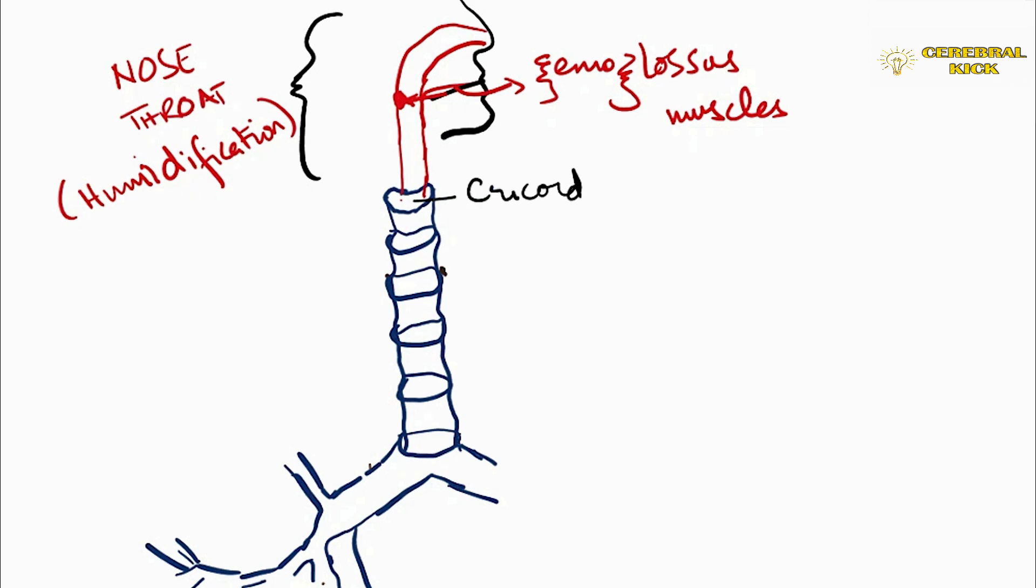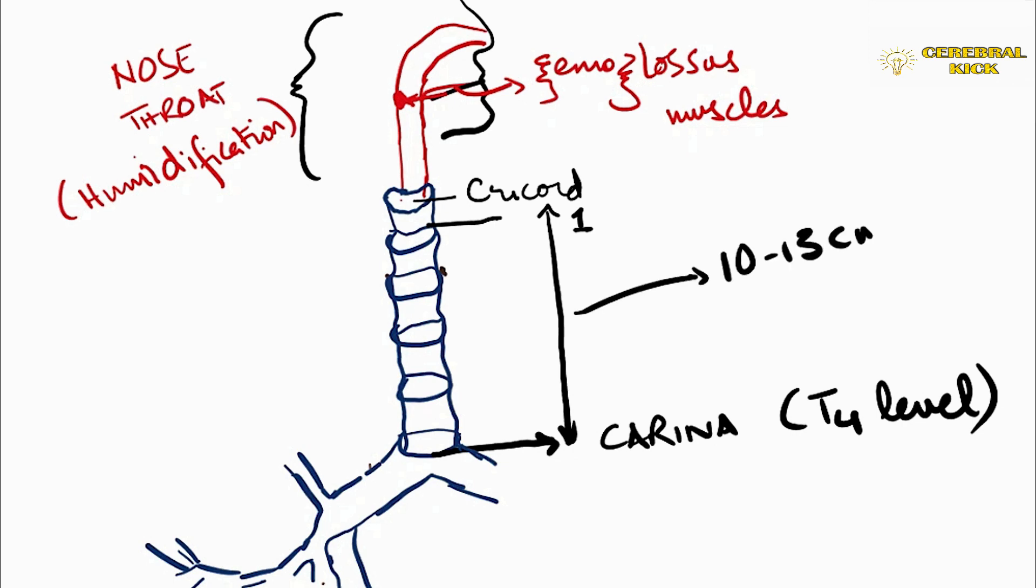The trachea starts with the cricoid and the first tracheal ring is below the cricoid until the carina where the trachea bifurcates into right and left main stem bronchus. The trachea itself is 10 to 13 centimeters in adults and is narrowest at the cricoid level, around 1.7 centimeters in male and 1.3 centimeters in female.